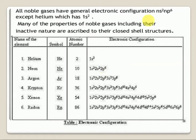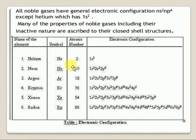The general electronic configuration of noble gases is ns² np⁶. For Neon: 2s² 2p⁶. Argon: 3s² 3p⁶. Krypton: 4s² 4p⁶. Xenon: 5s² 5p⁶. Radon: 6s² 6p⁶. Helium has atomic number 2, Neon 10, Argon 18, Krypton 36, Xenon 54, Radon 86.